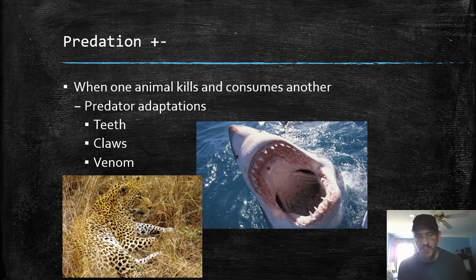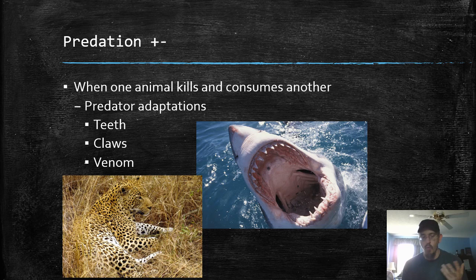Predation is when one animal consumes and eats another — catches, kills, consumes another. Predator adaptations include teeth, claws, venom, and camouflage. I want to talk about venom versus poison real quick. We saw poison ivy and we've heard of venomous snakes — there's no such thing as a poisonous snake. Poison is something you rub on your skin or have to eat to get sick from. Venom is injected into an animal — venomous snakes inject venom, a toxin, into the prey animal.